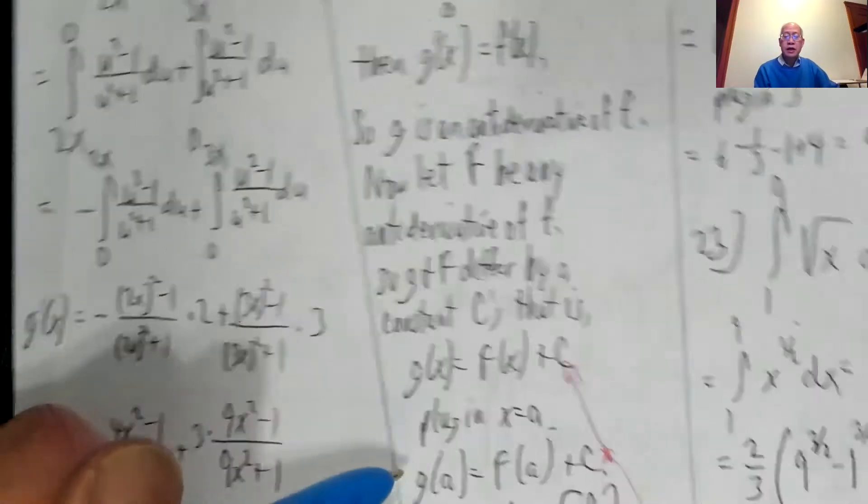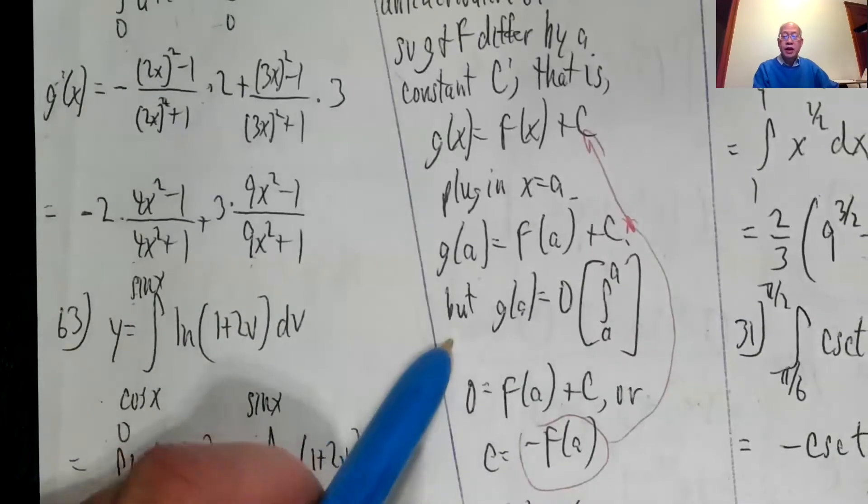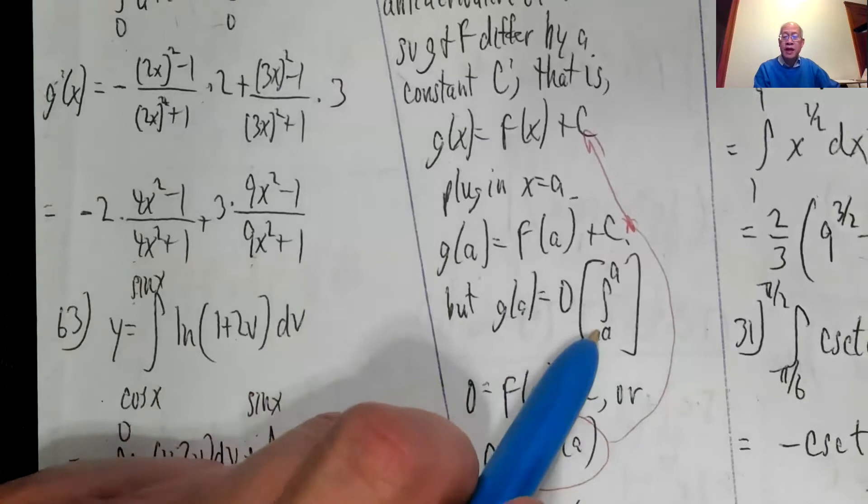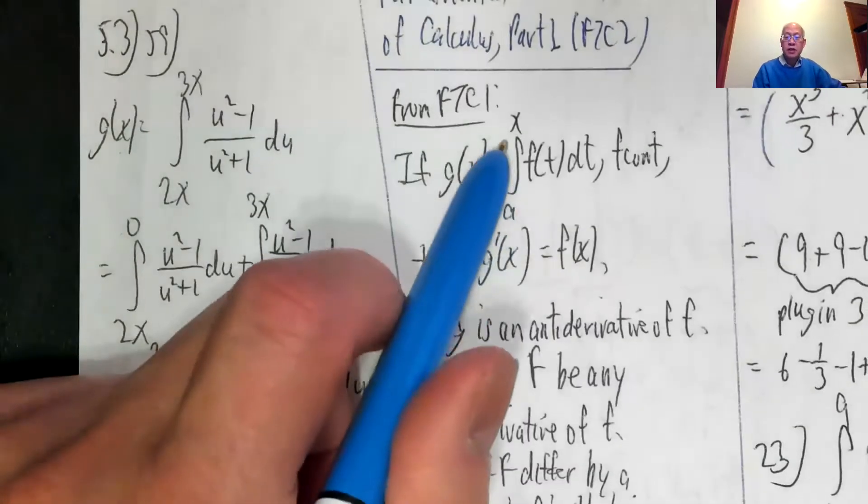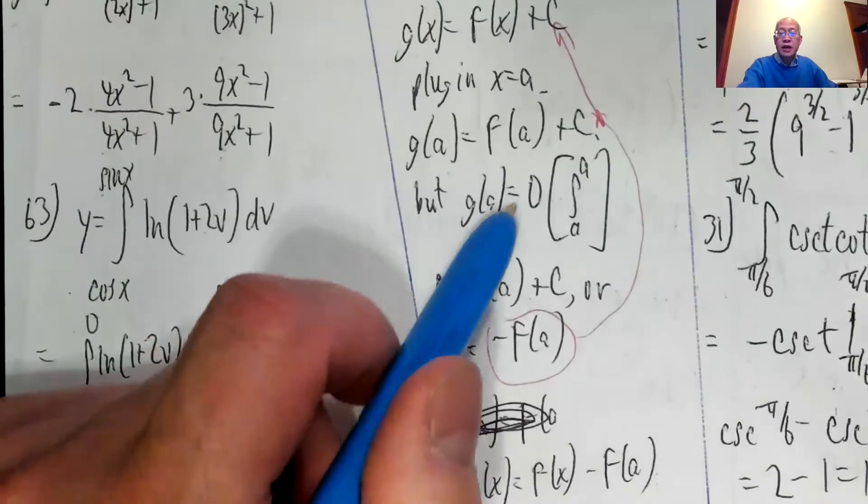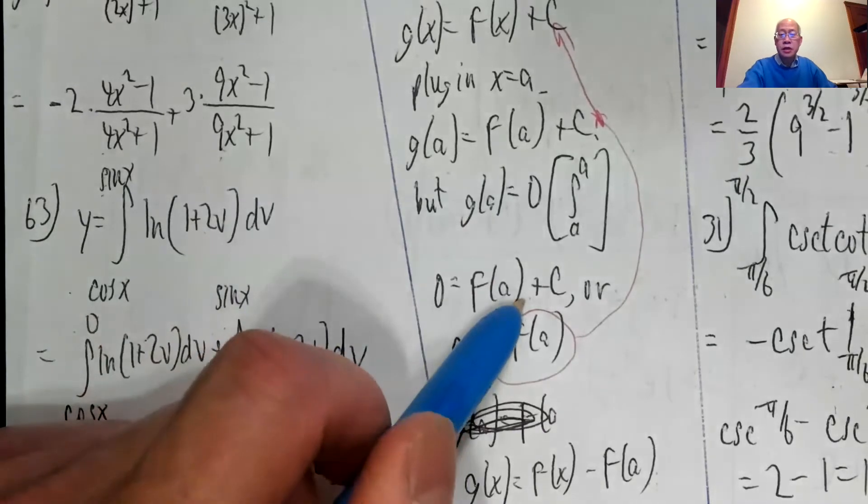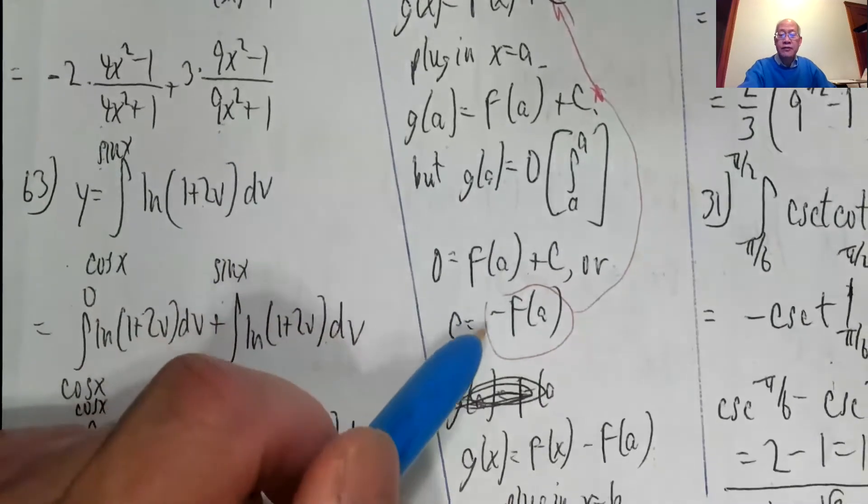Now if I plug in x equals a, g of a equals F of a plus c, but g of a is 0 because that's the integral from a to a in definition. So I plug in a right here, g of a is 0. So that means 0 equals f of a plus c, or c is negative f of a.